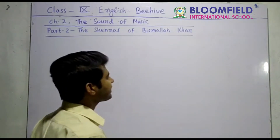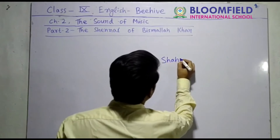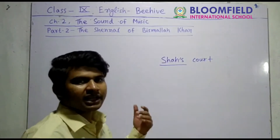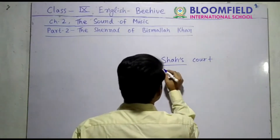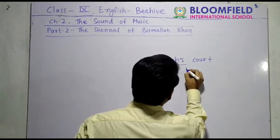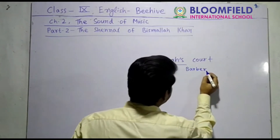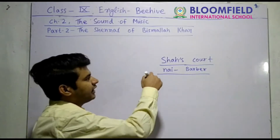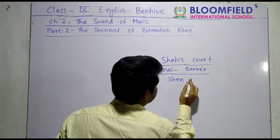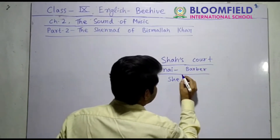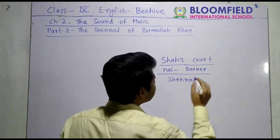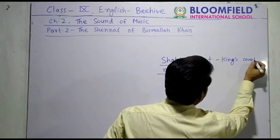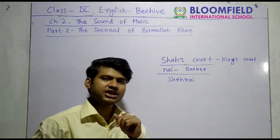'Shah' is an Urdu word meaning emperor or king, and 'nai' means barber. The barber family who were musicians improvised and improved the Pungi. Combined, the name became Shahnai — 'shah' meaning the king's court, and 'nai' meaning barber.